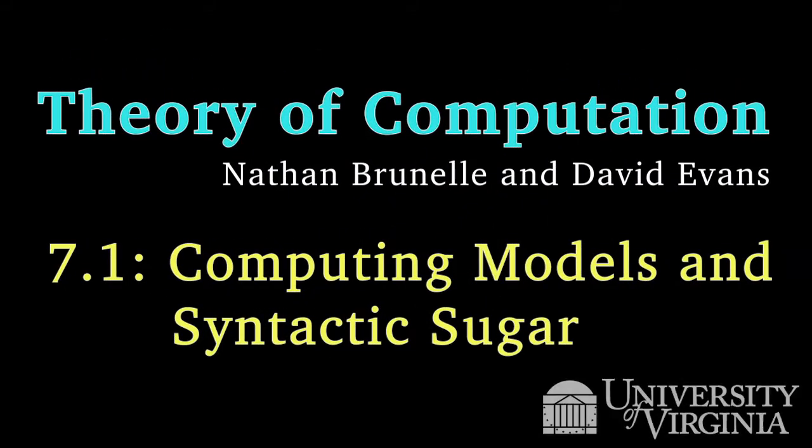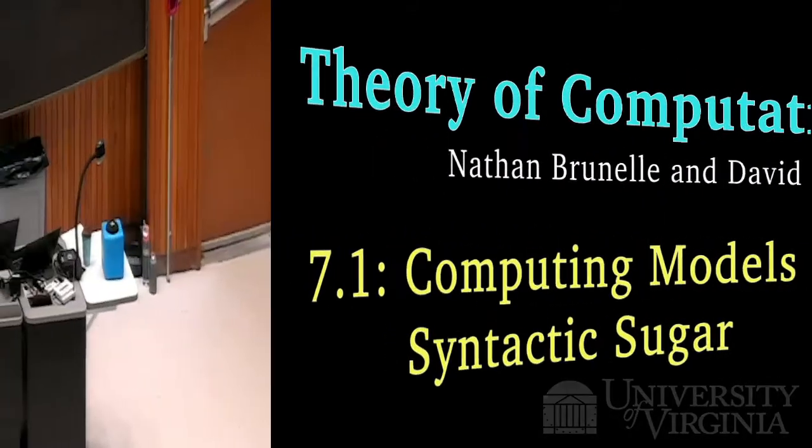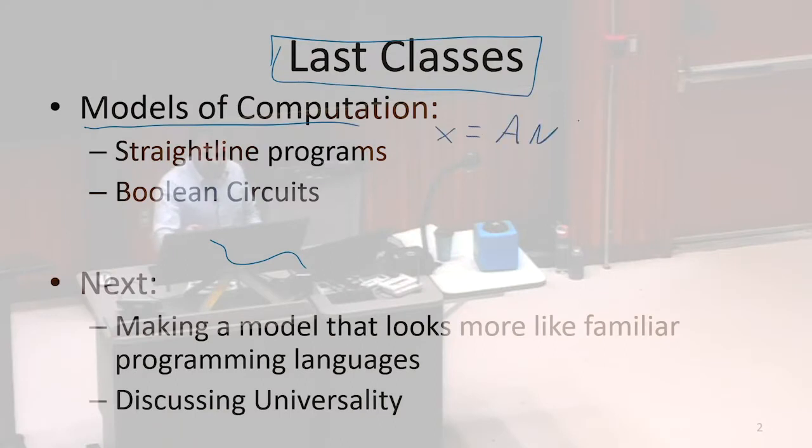We've been talking about models of computation, and in particular two different models: straight-line programs, where we could say x equals AND of y and z, and Boolean circuits, where we have gates that convey this idea of transistors doing logic. This is an AND gate here, with y and z as inputs, and the output is something like x.